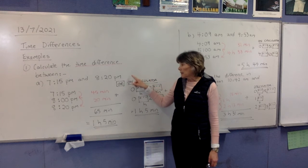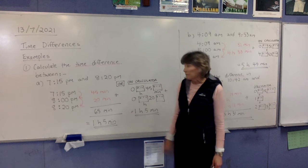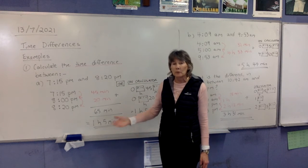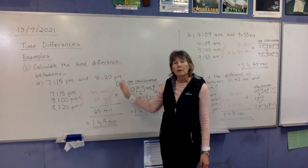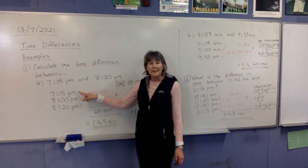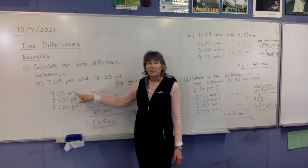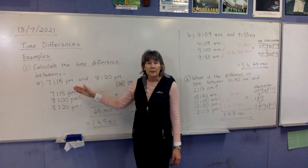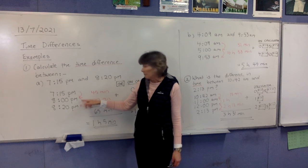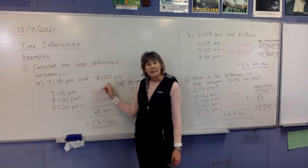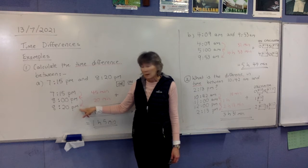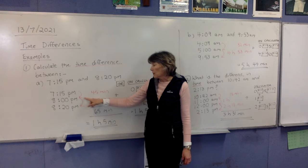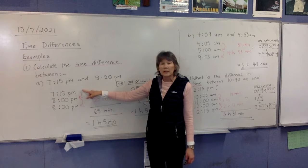We're going to calculate the time difference between 7.15pm and 8.20pm. You'll notice both of these times are pm times, so we're not crossing over from am to pm or pm to am — we're staying on pm times. Copy down the first time: 7.15pm. Then write down the next hour, which is right on 8pm. After that, write down the final time, which is 8.20pm. Then in red, write down the gaps or differences between each time.